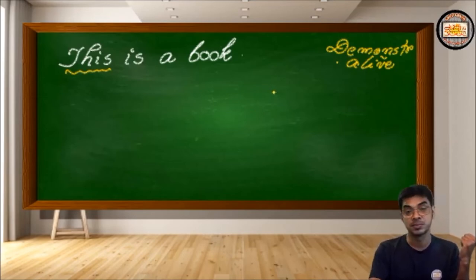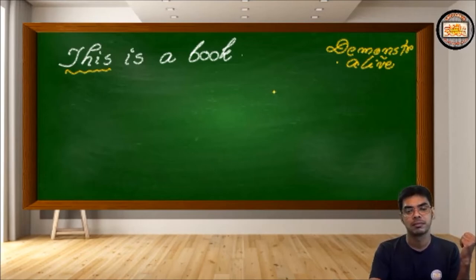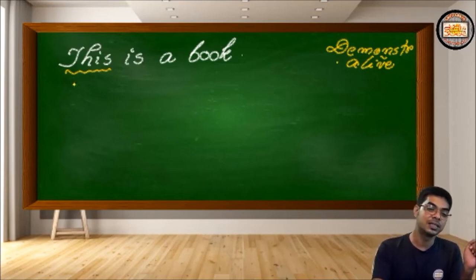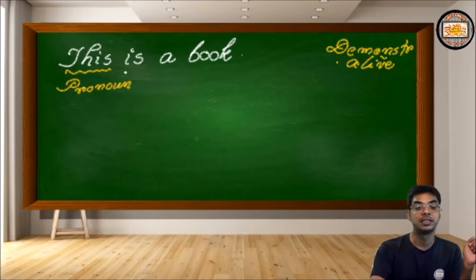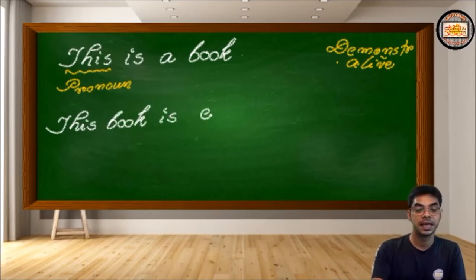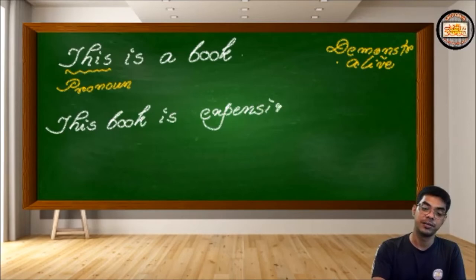You might say it's a pronoun, or you may say it's an adjective. Your answer is that 'this' is a demonstrative pronoun. Now let me write down another sentence: 'This book is expensive.' So two sentences are written here — the first says 'This is a book' and the second says 'This book is expensive.'